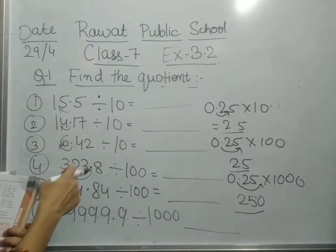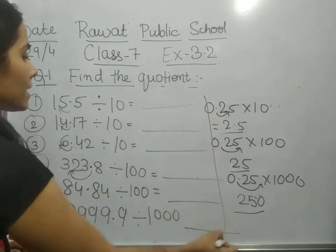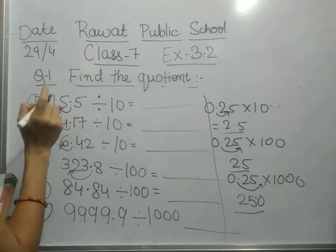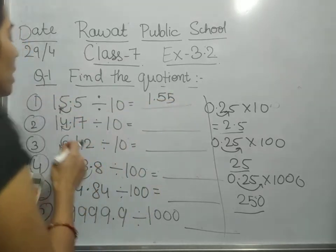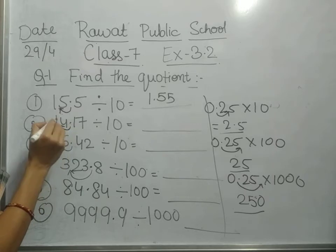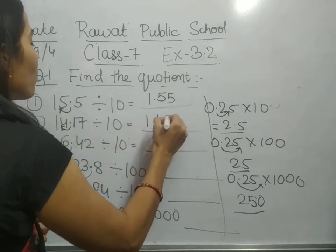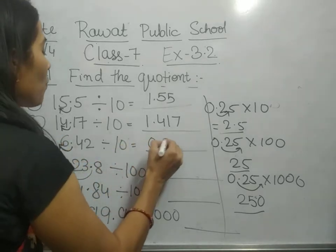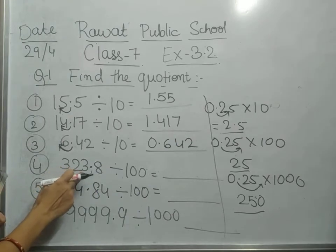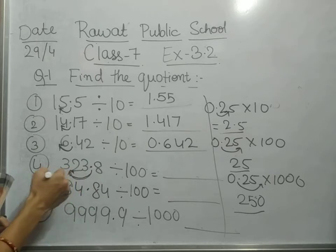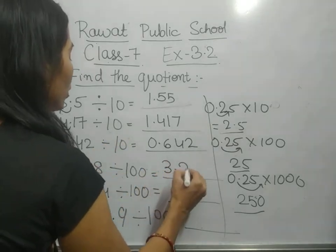Now if we are dividing by 10, 100, or 1000, what answer will we get? If 15.5 is divided by 10, the decimal will shift to the left by 1 digit. If 6.42 is divided by 10, the decimal moves to the left by 1 digit, so you get 0.642. In the same way, 323.8 divided by 100 — the decimal moves to the left by 2 digits — so you get 3.238.